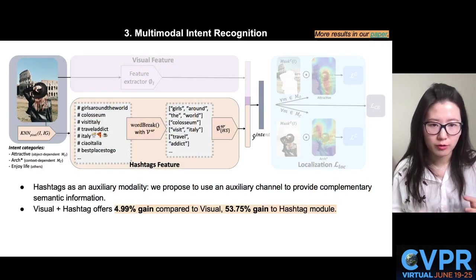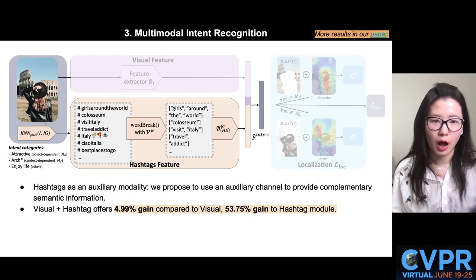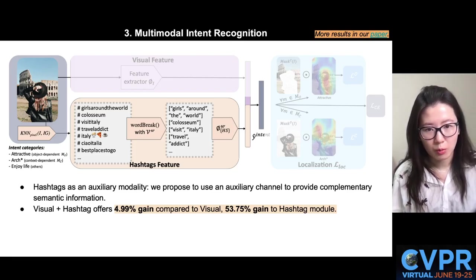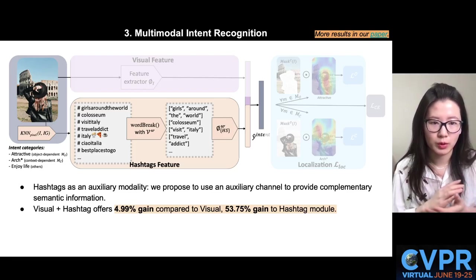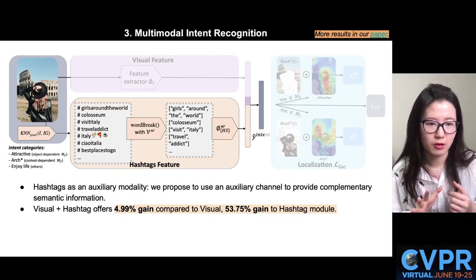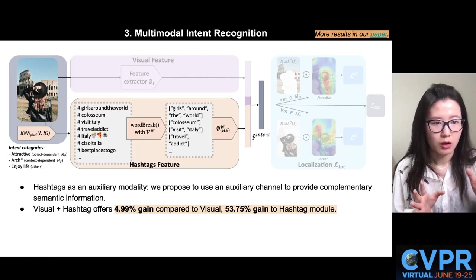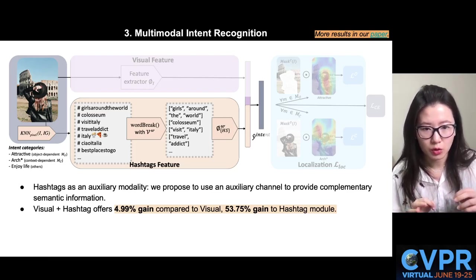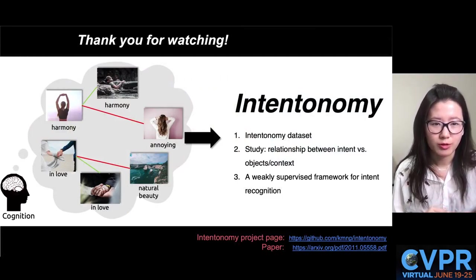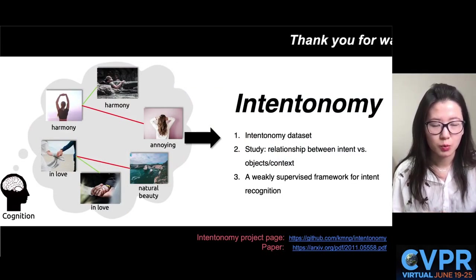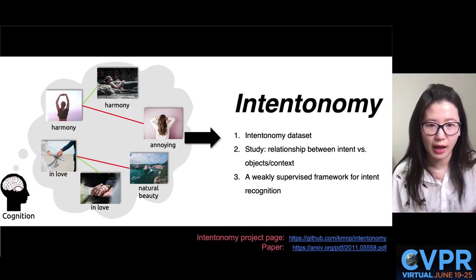We also found that sometimes visual information alone is not sufficient for predicting certain classes. To compensate, we propose to use language information as a complementary clue. We observed that combining both modalities offers 5% and 53% relative gain, comparing to using the unimodal approaches. We hope that this paper will facilitate future research to better understand the cognitive aspects of images.